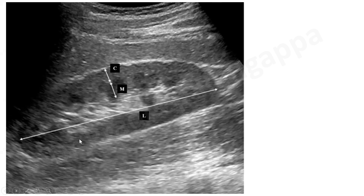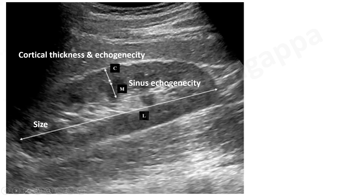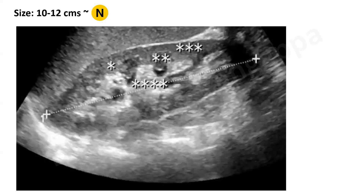When we are doing a renal ultrasound, this is how the kidney would look. We take the longitudinal measurement and look at the size of the kidney. This would be the renal sinus echogenicity, and this is the cortical thickness and echogenicity. These are the things we interpret in the renal ultrasound: size, sinus echogenicity, cortical thickness, cortical echogenicity, and perfusion. I'll take you through each of these as to how we look at them.